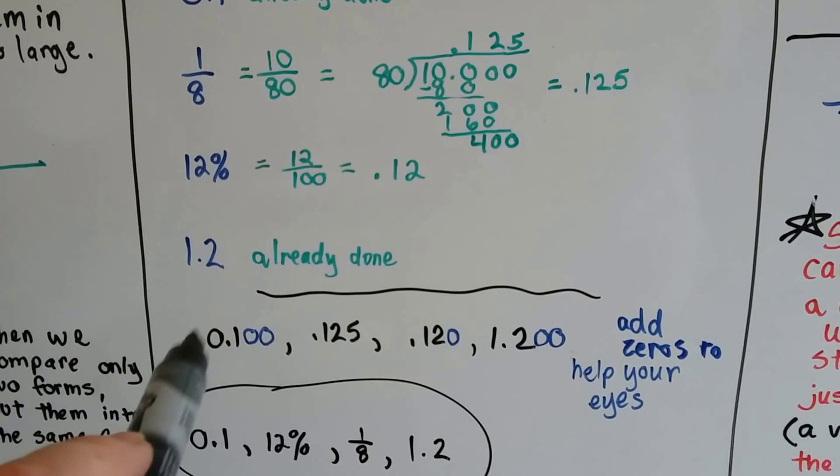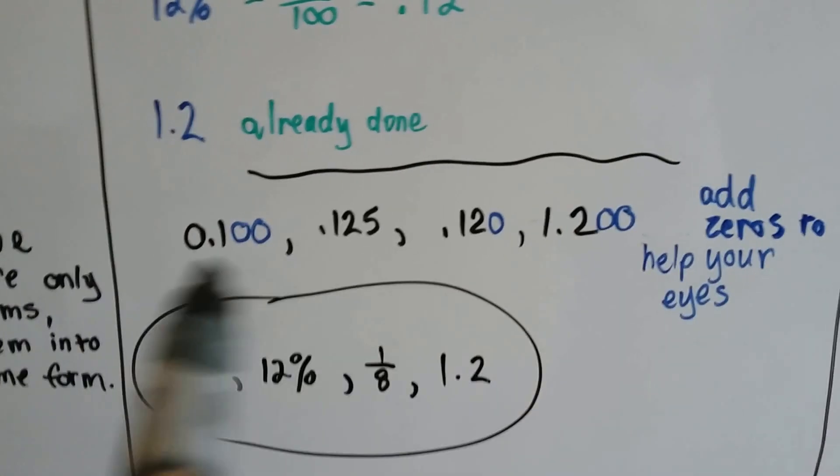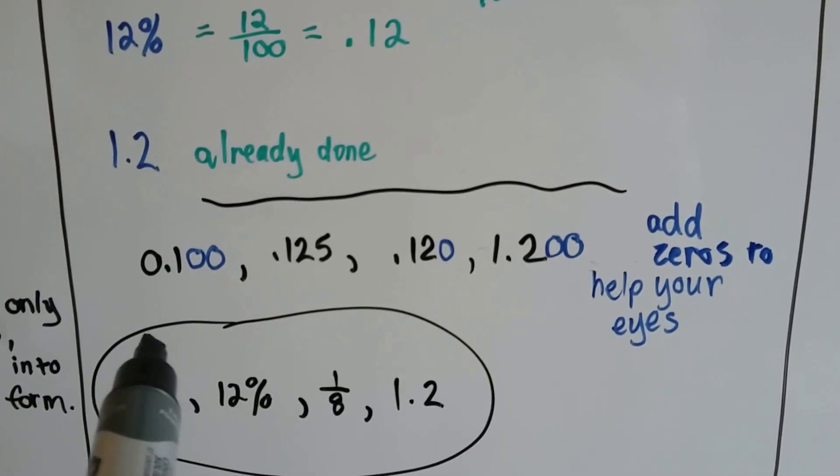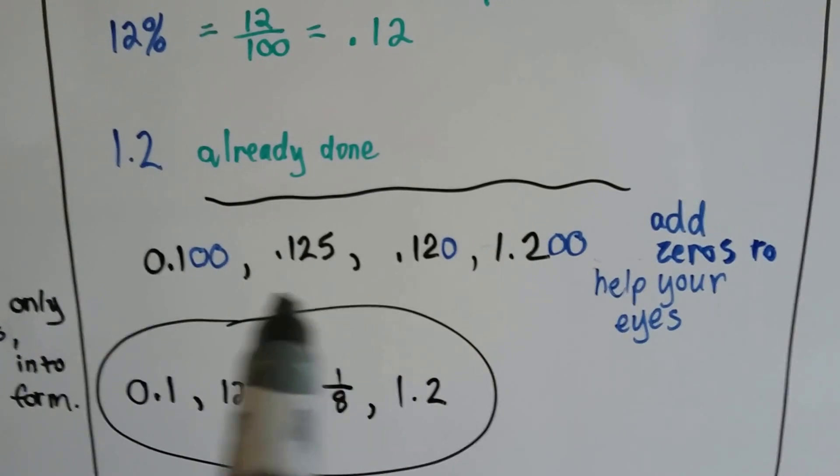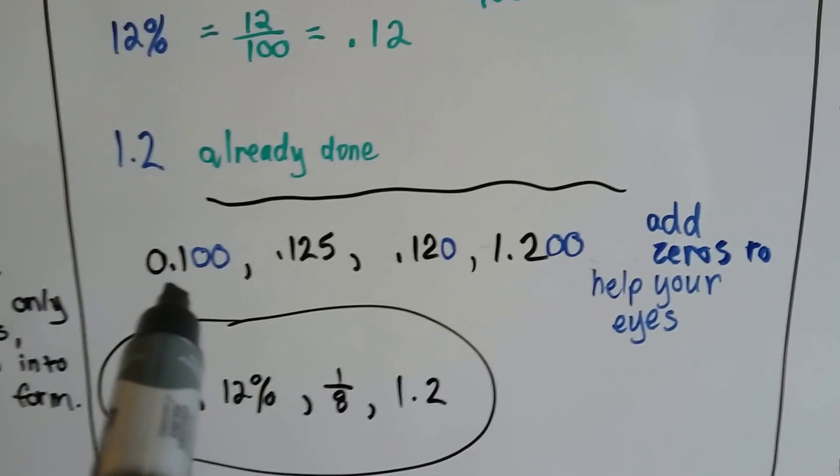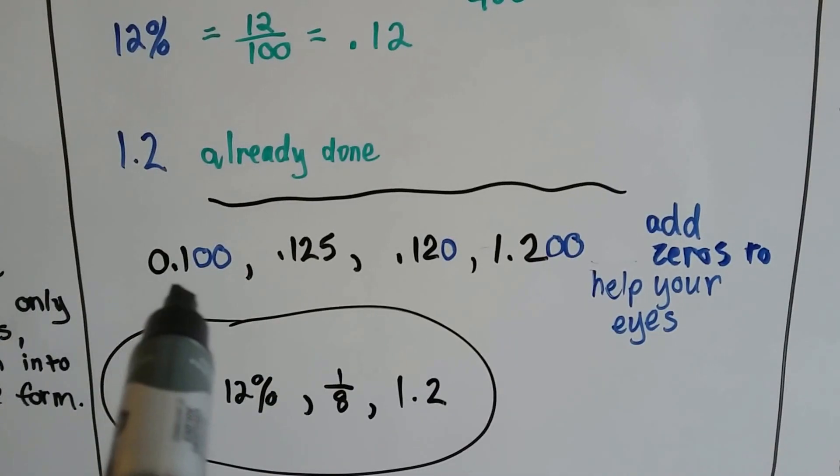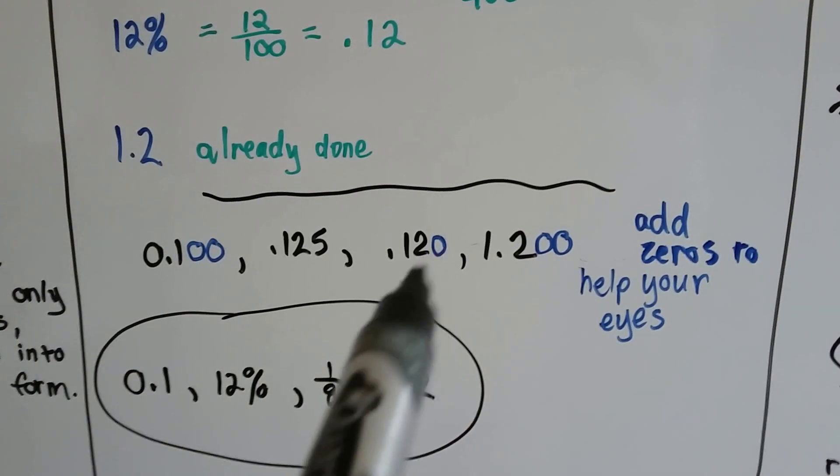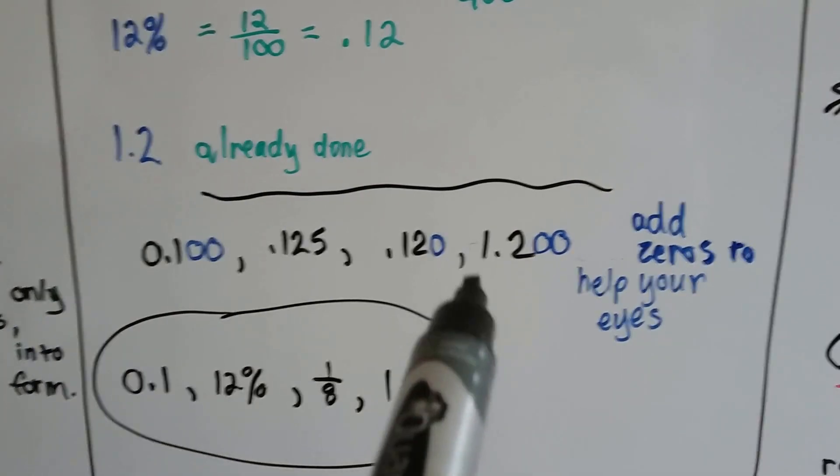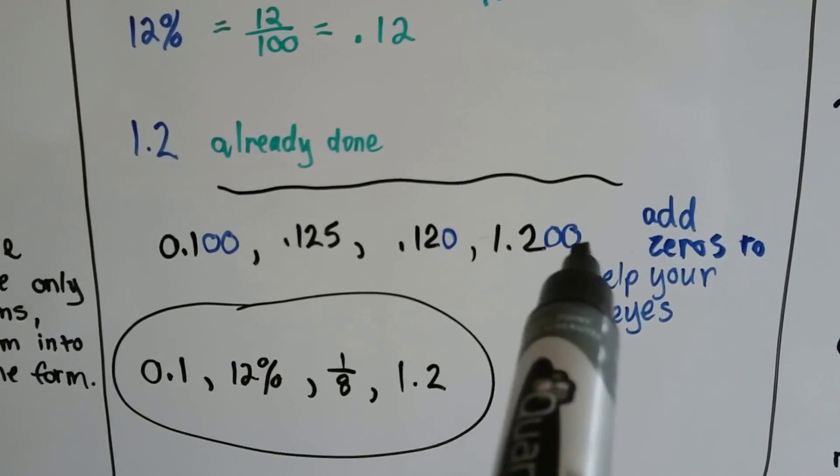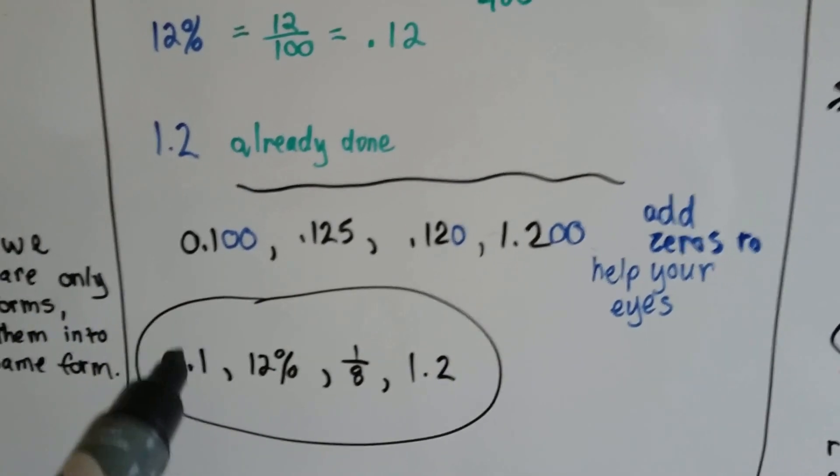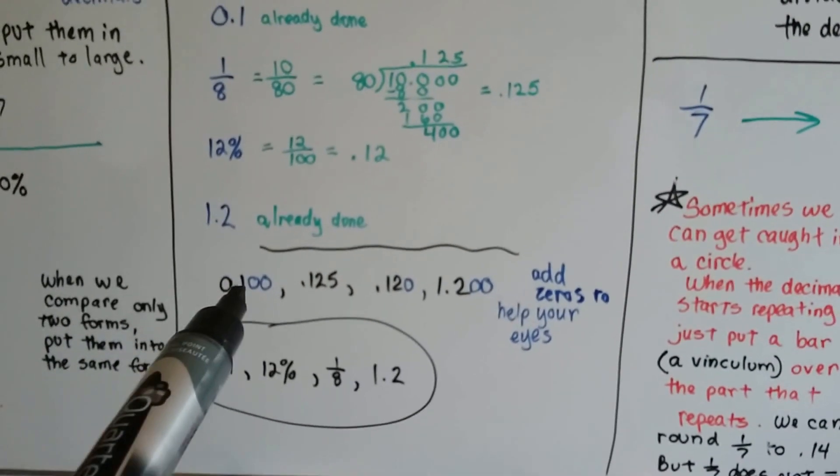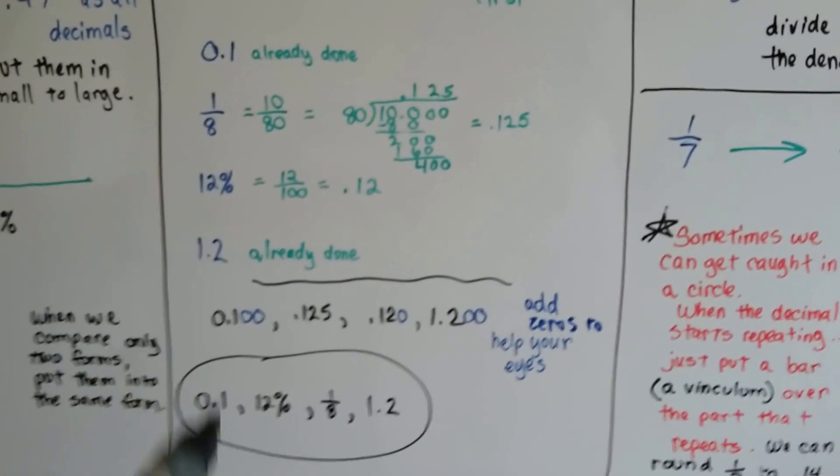What I did, because they had all different amounts of numerals to them, I added zeros to help my eyes. Since .125 had three digits, I gave them all three digits after the decimal point. Now it's really easy to see which one's big and which one's small. 100 is smaller than 125. 120 is smaller than 125. But 1.200 is way bigger. So that's going to be the biggest.